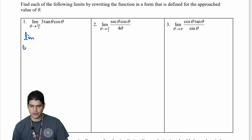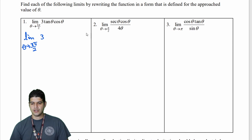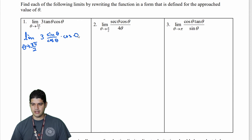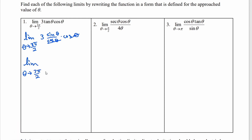I want to rewrite this using a quotient identity. The quotient identity for tangent is sin/cos, so I rewrite it as 3 · (sin θ / cos θ) · cos θ. The cosines divide out, giving the limit as theta approaches 3π/2 of 3sin(θ). Direct substitution: 3 · sin(3π/2). Sine of 3π/2 is −1, so 3 · (−1) = −3. Rewriting made this much faster to solve.